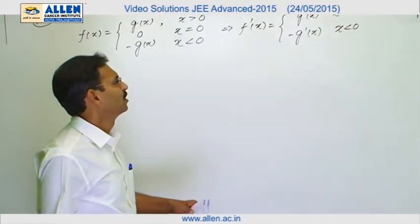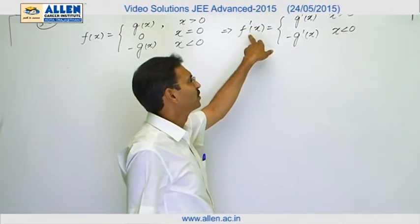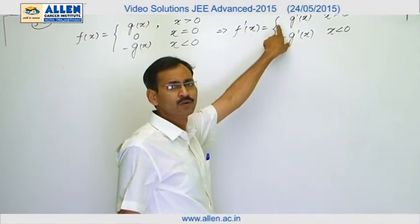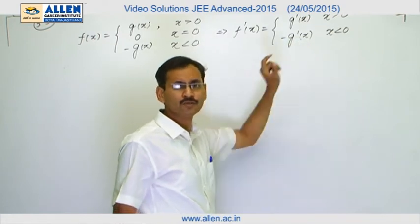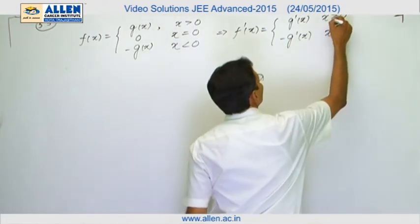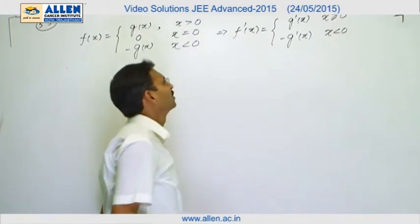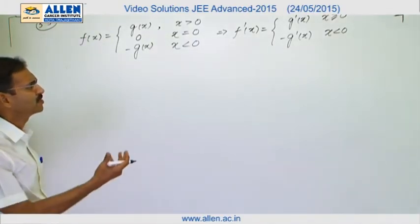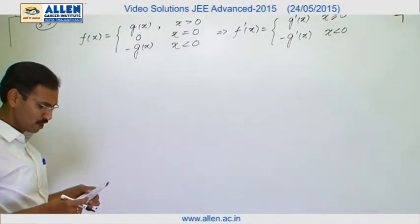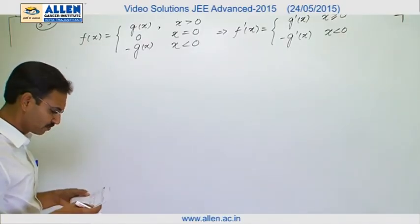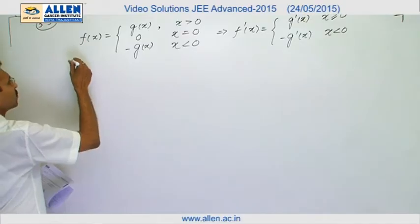We can see the RSD of f dash at 0 is g dash 0 which is given as 0 and LSD is minus g dash 0 which is also 0. That is why we can apply the equality anywhere. This gives us f dash x and we can say the function f dash x is existing at x equals to 0. So, option a is correct. fx is differentiable at 0.